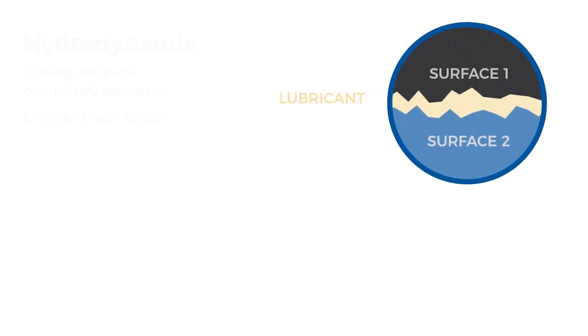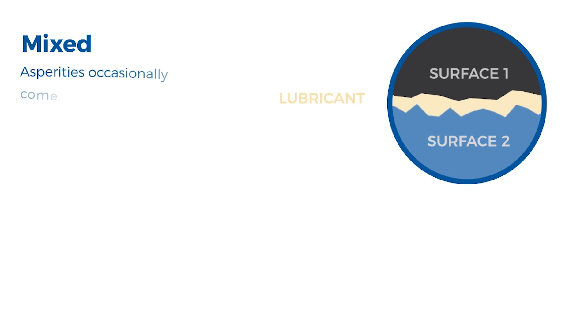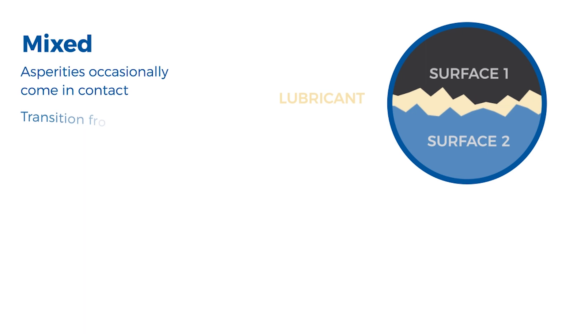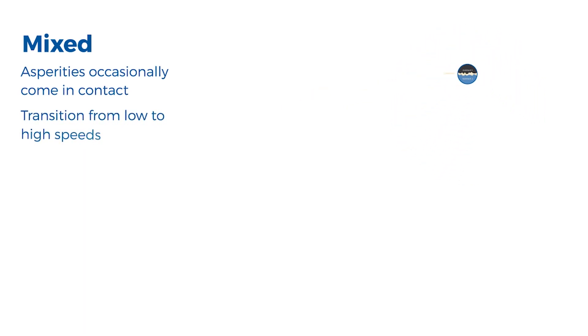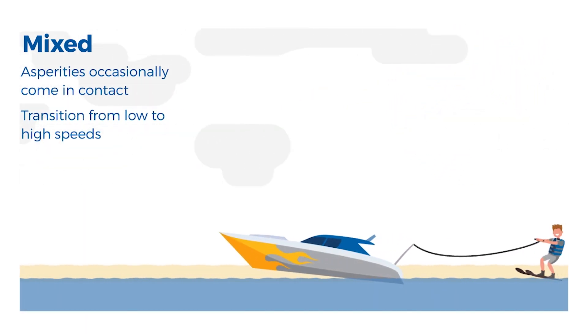When boundary and hydrodynamic regimes coincide, there is mixed lubrication. The asperities of bounding surfaces will extend through the film and occasionally come in contact. Mixed lubrication occurs during the transition from low to high speed operation.